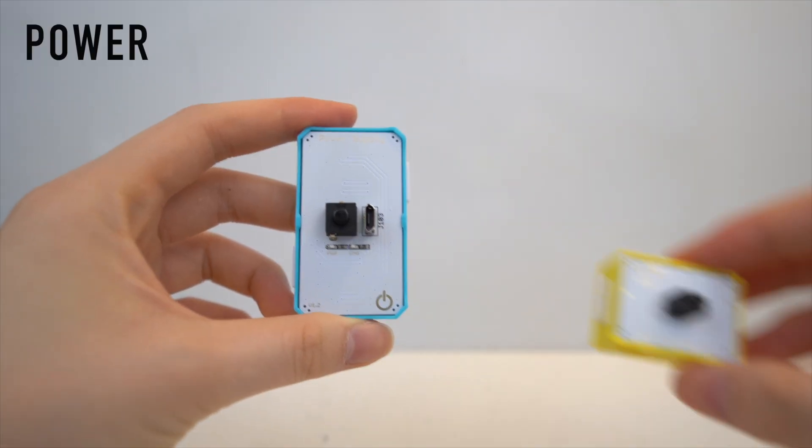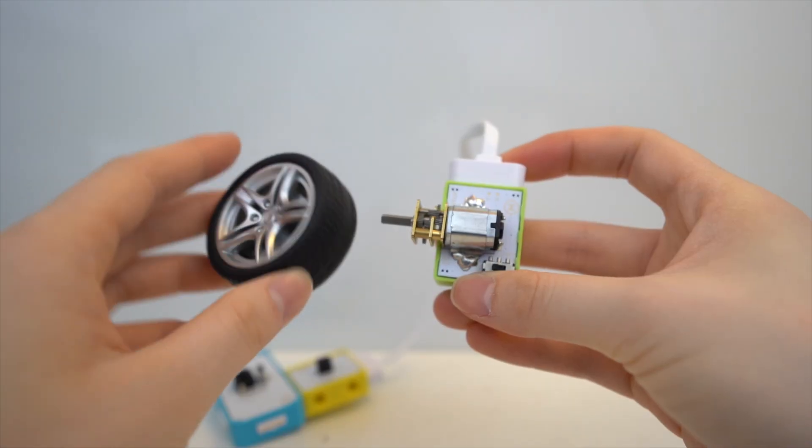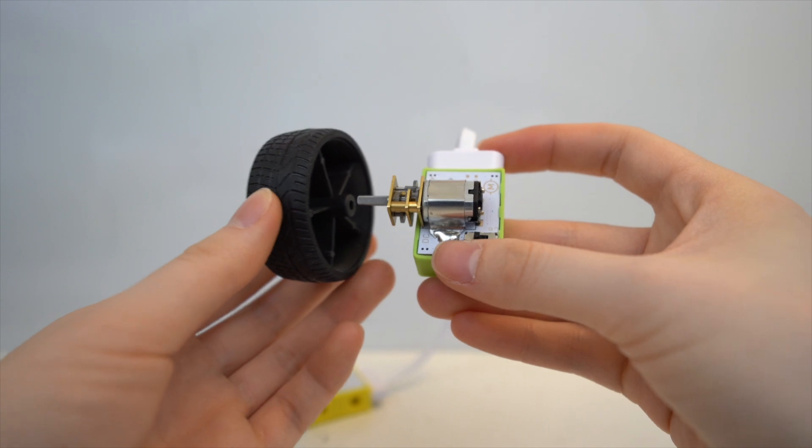For the circuit I connected power to an IR reflective sensor, then I connected that with a cable and motor. Then I added a wheel that came with the kit onto the motor.